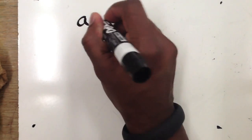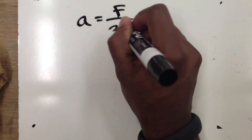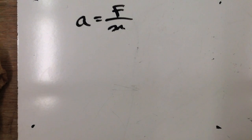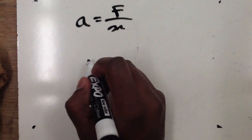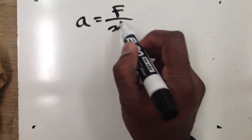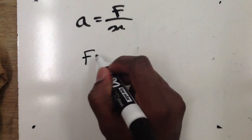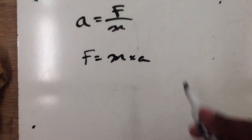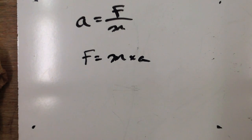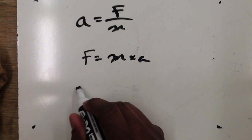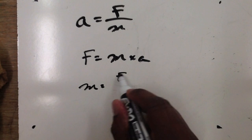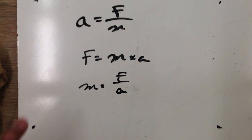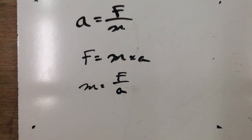You might see this formula written in different ways — there are three variables: a, F, and m. We can use different forms of the same equation. If we were solving for F, we'd multiply both sides by m, giving us F = ma — force equals mass times acceleration. If we wanted to write it in terms of m, we could say mass equals force divided by acceleration. These are all the same equation, just written differently. Watch the next video for worked examples.